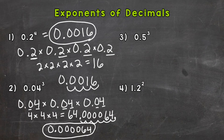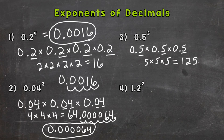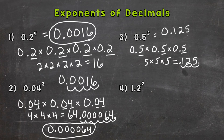Number three: five-tenths to the power of three. Let's expand our five-tenths out three times. Essentially we have five times five times five, and we can put the decimal in at the end. Five times five is twenty-five, times five is one hundred twenty-five. Now let's see how many digits are to the right of the decimal in the original problem: one, two, three. So we move the decimal in three places, giving us one hundred twenty-five thousandths.